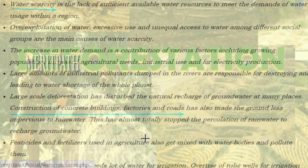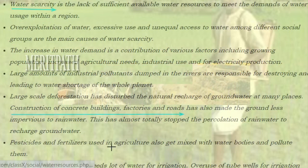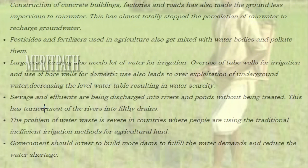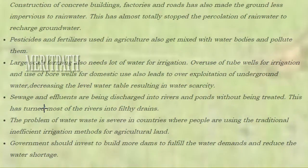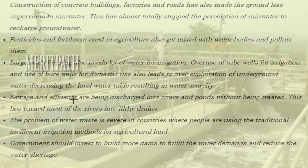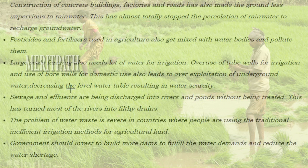This has almost totally stopped the percolation of rainwater to recharge groundwater. Pesticides and fertilizers used in agriculture get mixed with water bodies and pollute them. Large-scale farming requires large amounts of water for irrigation. Overuse of tube wells for irrigation and bore wells for domestic use leads to over-exploitation of underground water, decreasing the water table. Sewage and effluents are discharged into rivers and ponds without treatment, turning most rivers into filthy drains.